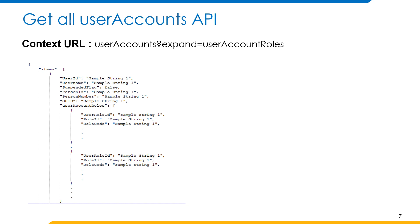Here you can see the example response body of the GetAllUserAccounts API. Basically, this response consists of a list called items under which we will have user account information such as user ID, username, suspended flag, person ID, person number, GO ID, and user account roles information in the form of a list called user account roles.